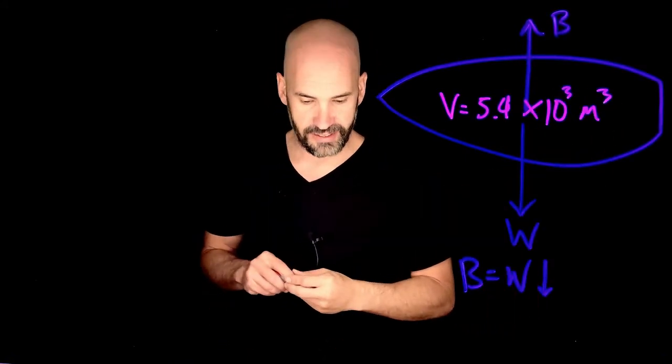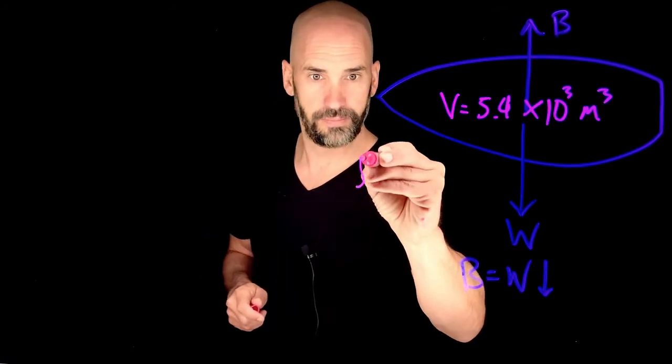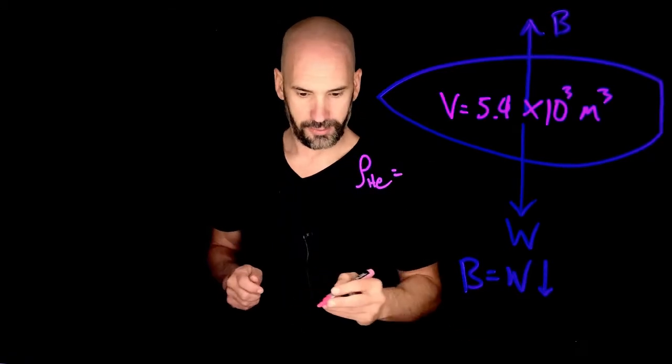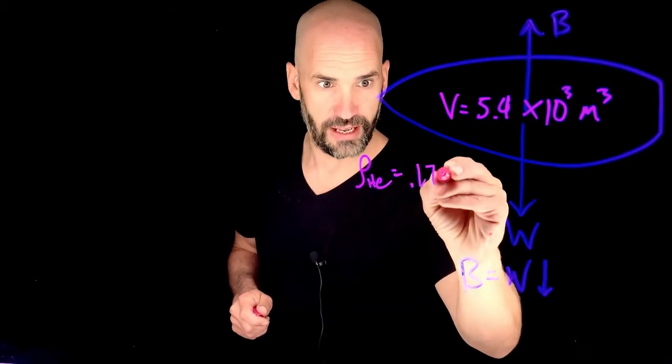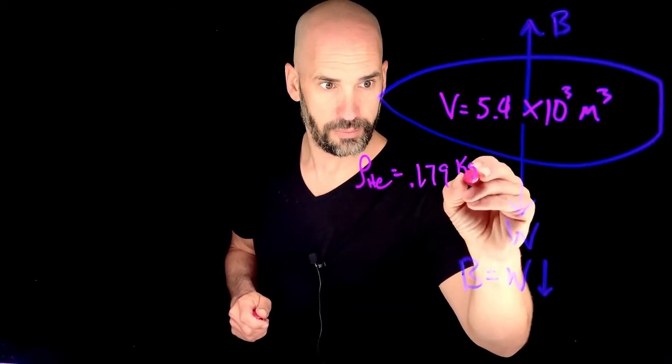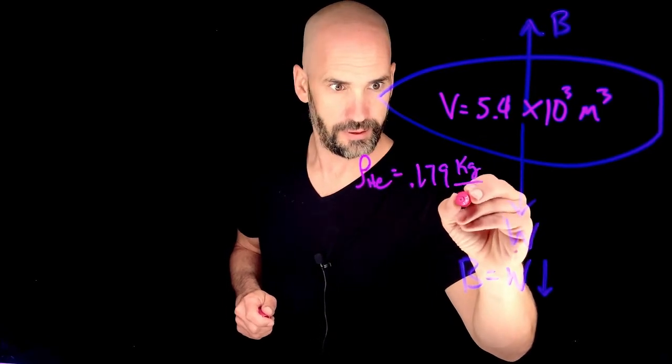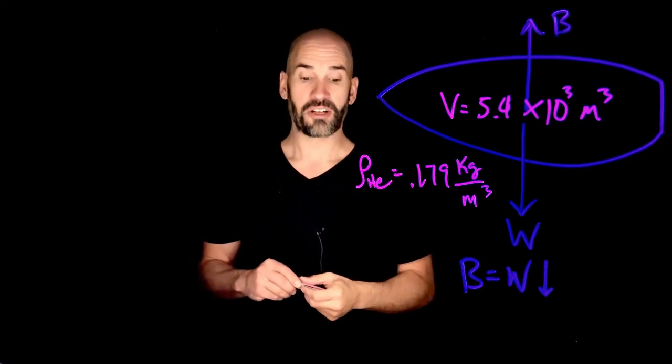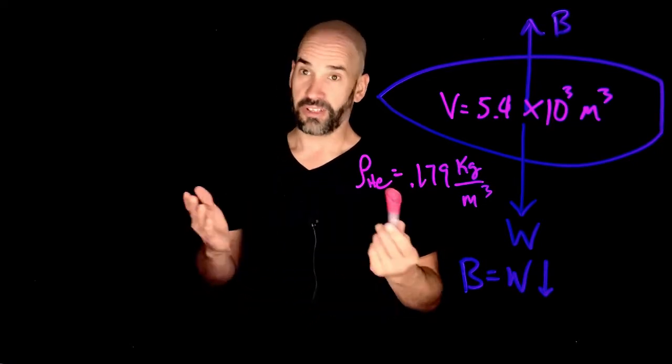And the density of helium, density of HE, is going to be about 0.179 kilograms per meters cubed. Compare that with water, which is a thousand kilograms per meters cubed. Much lighter, much less dense.